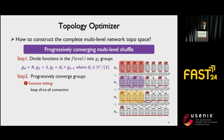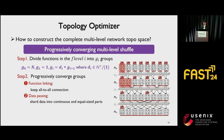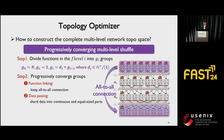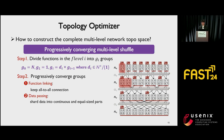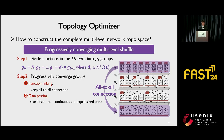We progressively converge groups until it becomes one group at the last function level. In this process, the function linking for each communication level needs to keep all-to-all connections between the groups and their upstream mappers. For example, when we converge groups C10 and C11 in the purple rectangle into group C20 in the yellow rectangle, we need to keep all-to-all connections between functions in the yellow rectangle and their upstream in the red rectangle. The data passing shards data into continuous, equal-sized parts and orderly assigns them to receiving functions, ensuring all-to-all connections between mappers and reducers.